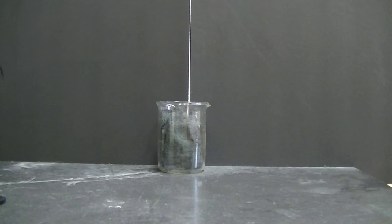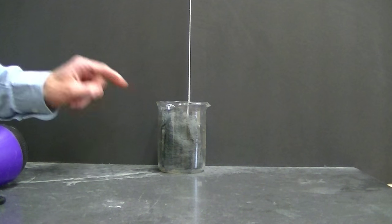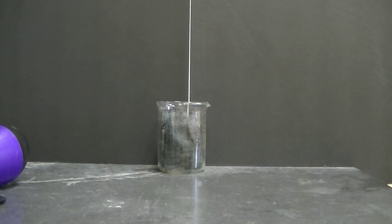All right. The beaker is now quite hot, so don't handle this with your hands. You're going to need tongs to take it to the balance. At this point, though, it's instructive to ask your students, do you think the mass of the steel wool has gone up, has gone down, or has it remained the same? Let's take it to the balance and find out.